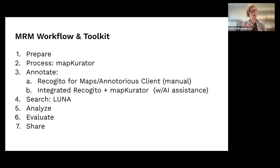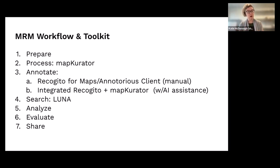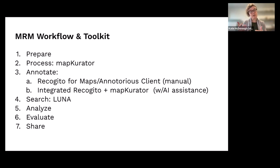Map Curator is the computer vision machine learning pipeline that allows us to create one GeoJSON file per map, which contains all of the text on that map, its pixel coordinates, and if the map is geo-referenced, we also get geospatial coordinates and some other information created during the process. We also had a really important part of the project focused on annotation of maps. The aim for annotation was really to create training and evaluation data — gold standard data — for use by Map Curator, to train models on data annotated by humans or to evaluate the results.